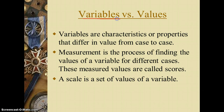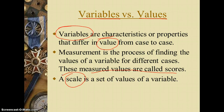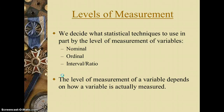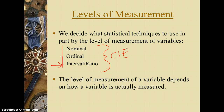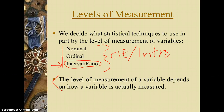We also need to know the difference between variables and values. Variables are characteristics or properties that differ in value from case to case. If we're measuring those values quantitatively, we generally call them scores, and all of the scores for a set of values is the scale. When we talk about levels of measurement, there are generally three — although combining interval and ratio — we can talk about nominal, ordinal, and interval/ratio. This is simply how a variable is actually measured.